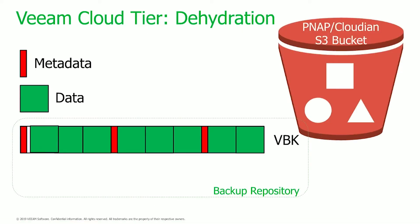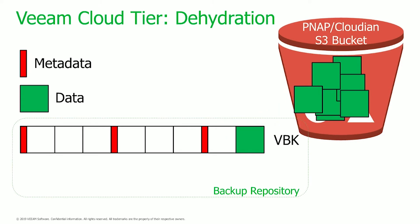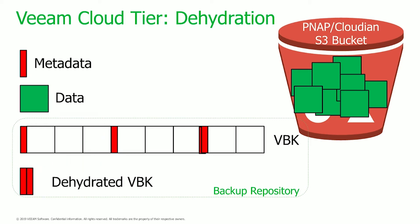The way it works is essentially as we meet these thresholds — either age or capacity thresholds — we will automatically start tiering off the payload data into an S3 bucket. What essentially happens is we dehydrate the VBK. You end up with a dehydrated VBK on the block disk, and we keep the metadata information on that disk. The dehydrated VBK, also called a shell VBK, contains the information needed to point to the S3 bucket payload data, making recoverability possible. We will reduce the amount of data that lives on block storage by tiering it off into object storage so that you can decrease cost.